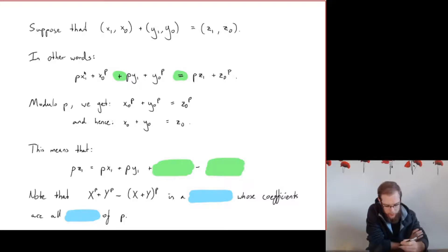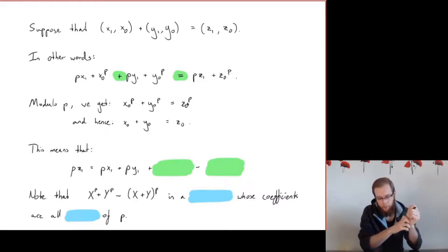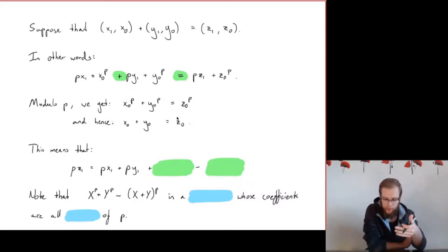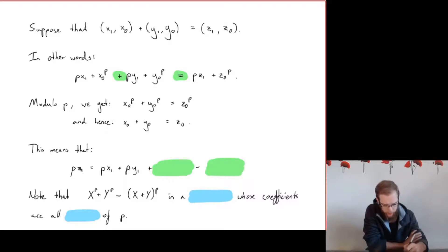Using this bijection along which we transferred the ring structure, that means p·x₁ + x₀^p plus p·y₁ + y₀^p equals p·z₁ + z₀^p. Now we look at this resulting equation modulo p: all terms of the form p·(something) cancel, and we're left with x₀^p + y₀^p ≡ z₀^p (mod p). But modulo p, raising to the power p does nothing by Fermat's little theorem. So in fact we just get x₀ + y₀ = z₀, which confirms we're on the right track.